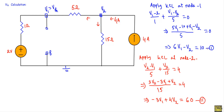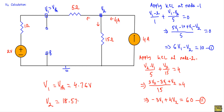Solving equations 1 and 2, we get V1, which equals Vth = 4.76 volts, and V2 = 18.57 volts. So Vth is equal to 4.76 volts.